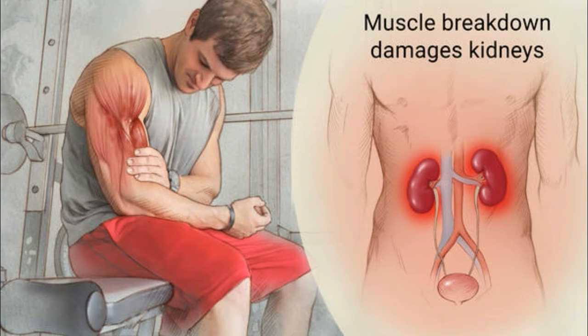The kidneys perform the function of filtering the blood. But as the blood is overloaded with the byproducts — myoglobin, potassium — of skeletal muscle breakdown, the kidneys may find it extremely difficult to perform their daily task. This can result in kidney failure.